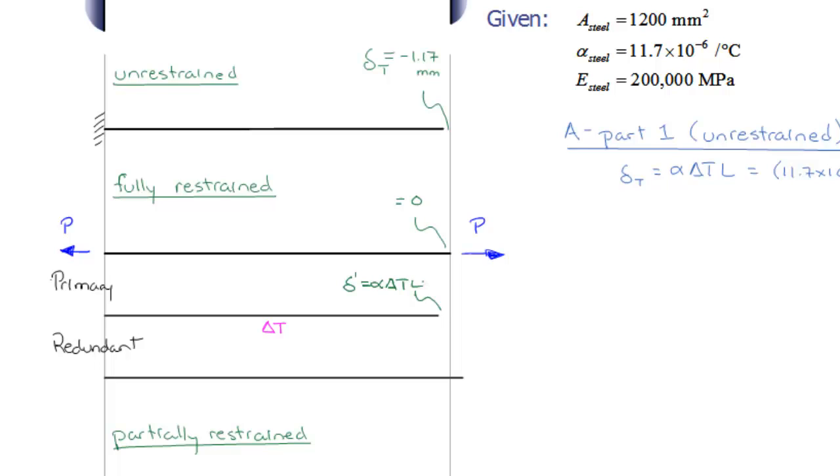On the redundant structure, in this case, we're going to superimpose our reaction forces. So we'll put in our P's. We won't superimpose the delta T.